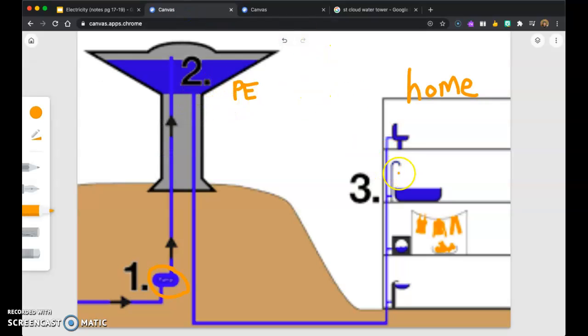So let's say you flush the toilet or you use the faucet in the sink. You have the potential energy from the water tower that will then move the water to your home, where you can use the sink or use the toilet.